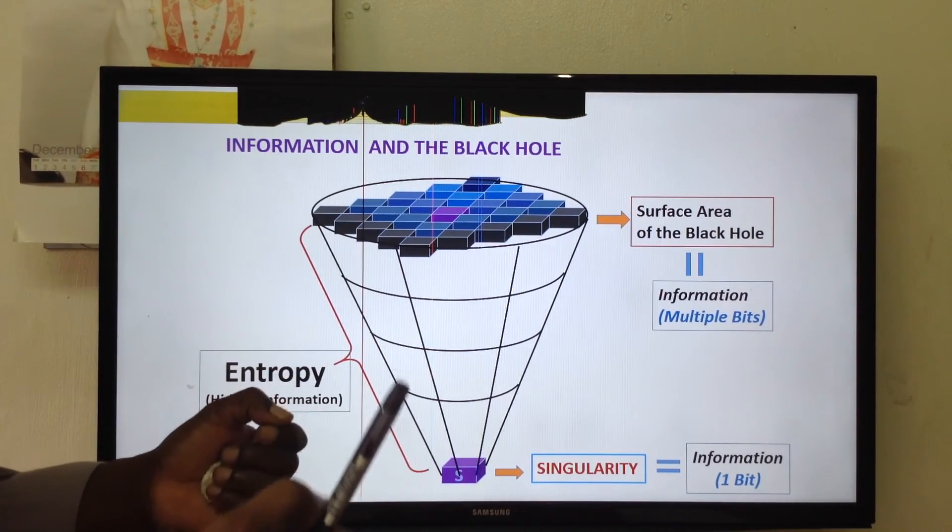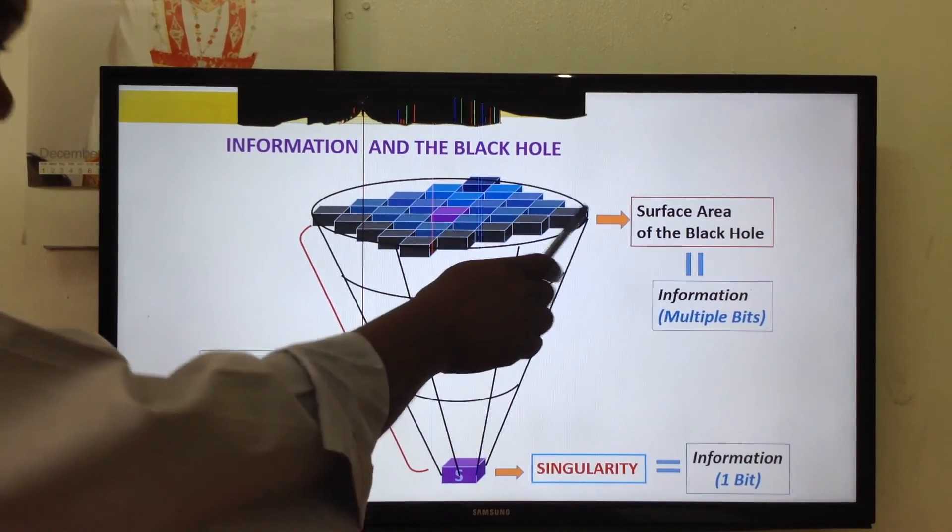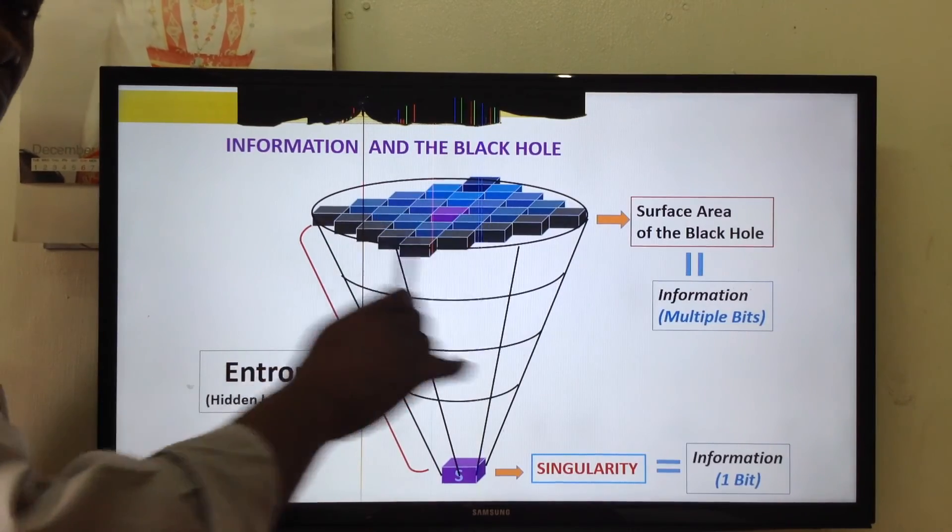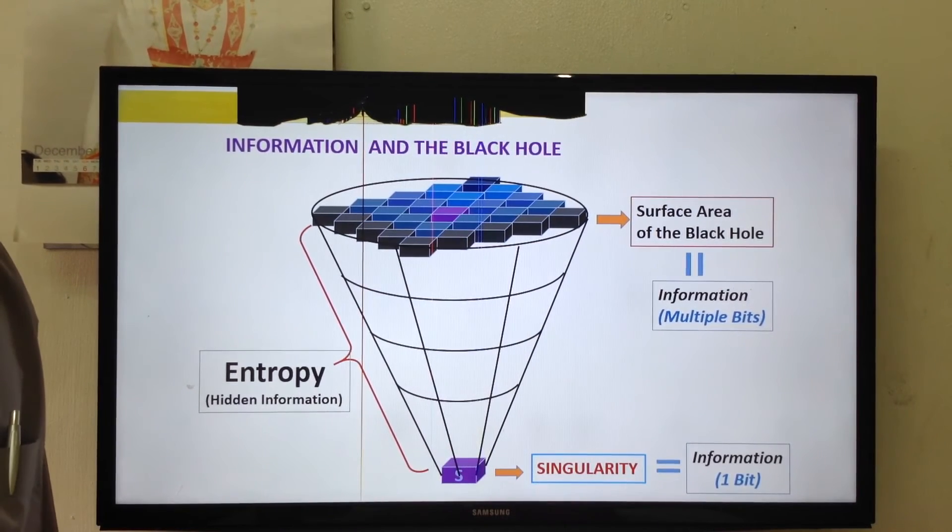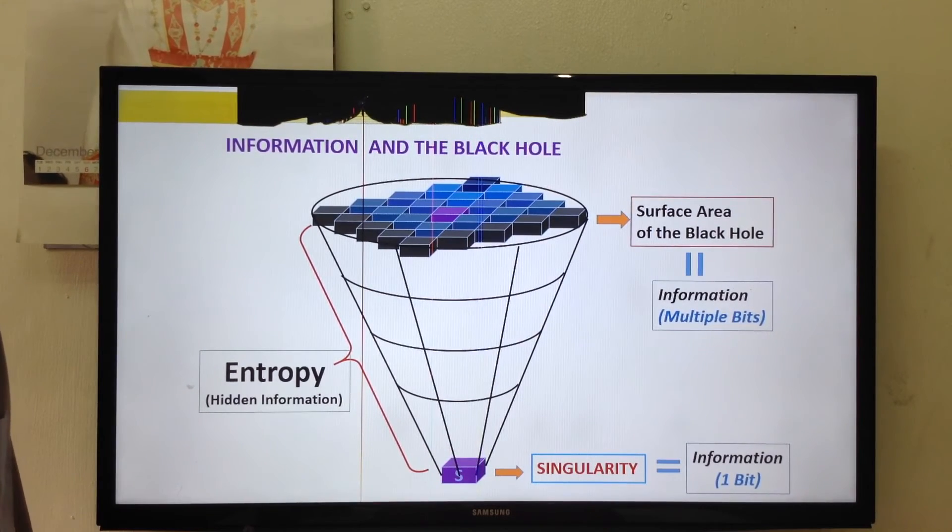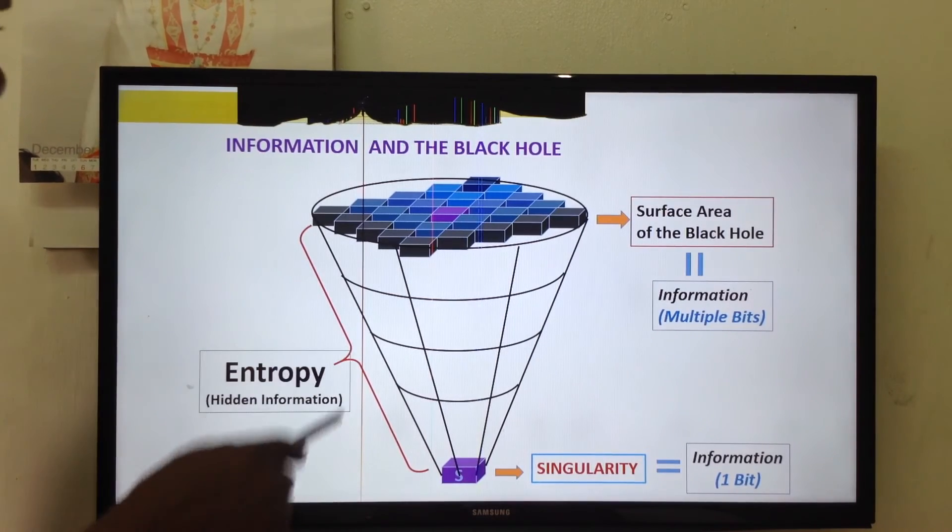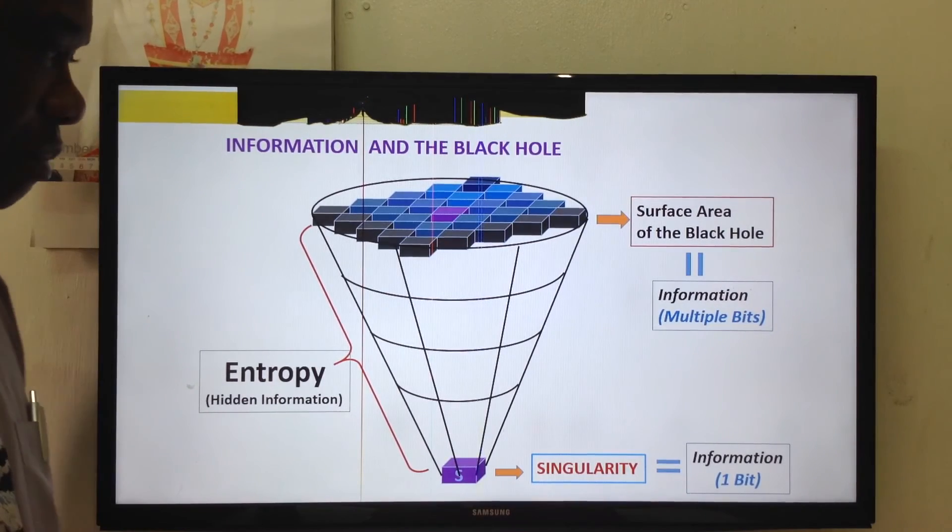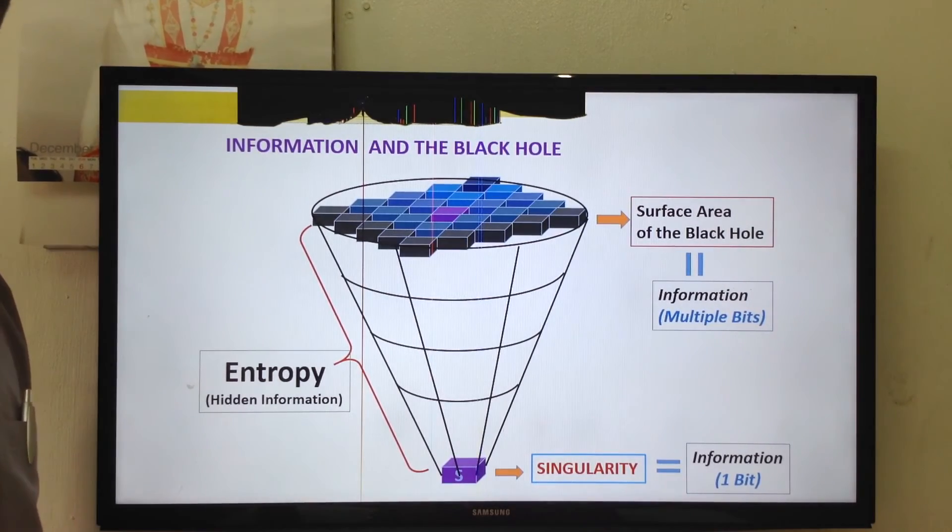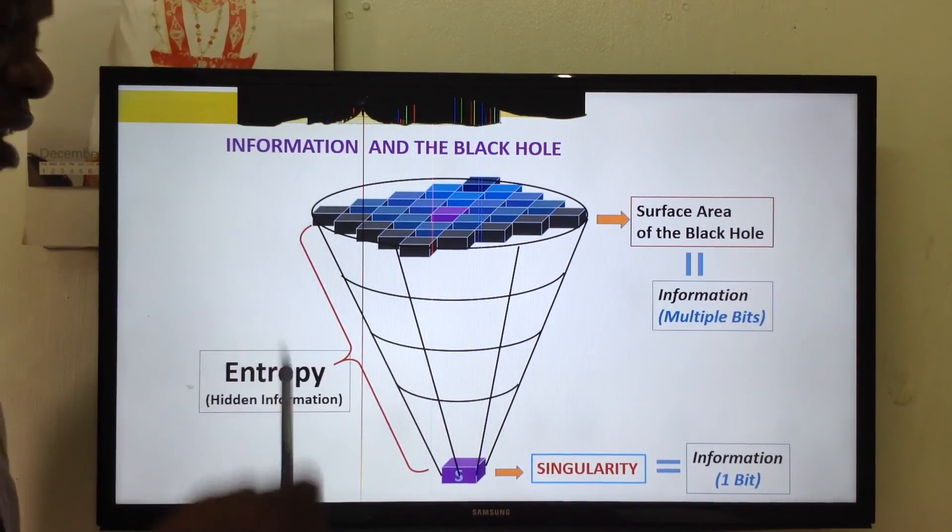So, if you add information to the singularity, what happens? The black hole will become bigger and bigger. And more bits we get here. More entropy we get. So, for those who understand. I think you should be happy. Because it shows directly that we are going to solve a very important problem in computer technology. We are going to solve a very important matter. The entanglement of quantum bits.